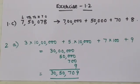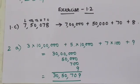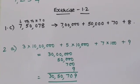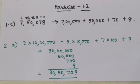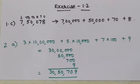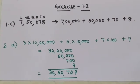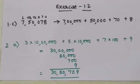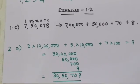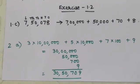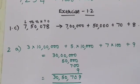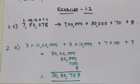You are supposed to write the numeral. Let us take question 3 into 10 lakhs plus 5 into 10,000 plus 7 into 100 plus 9, which equals 30 lakhs plus 50,000 plus 700 plus 9. The numeral is 30,50,709. You will finish the exercise in a similar way.